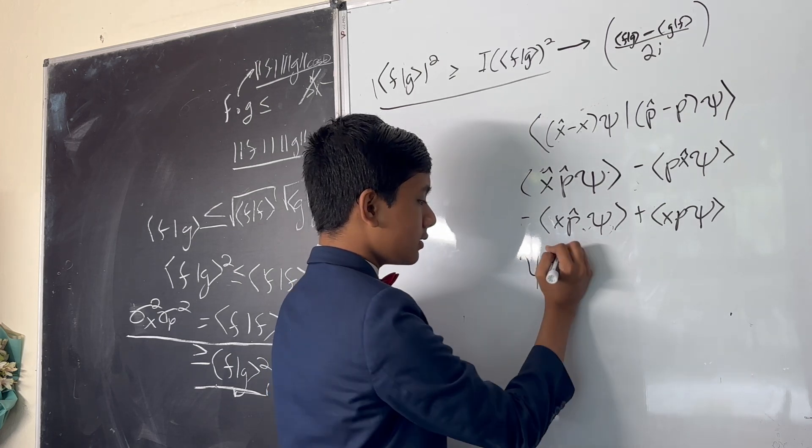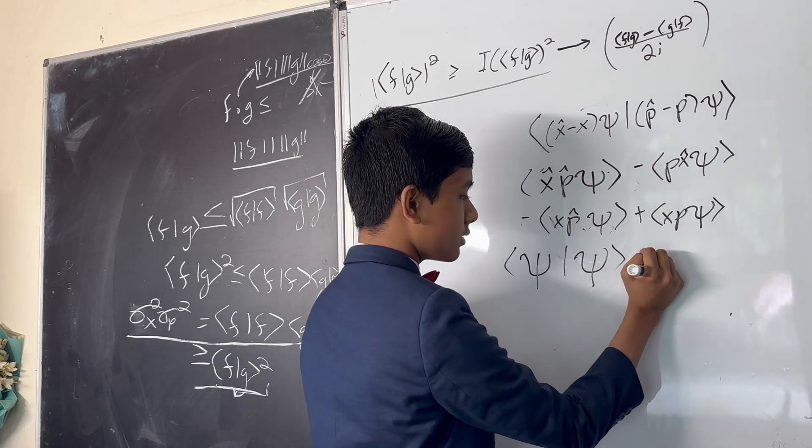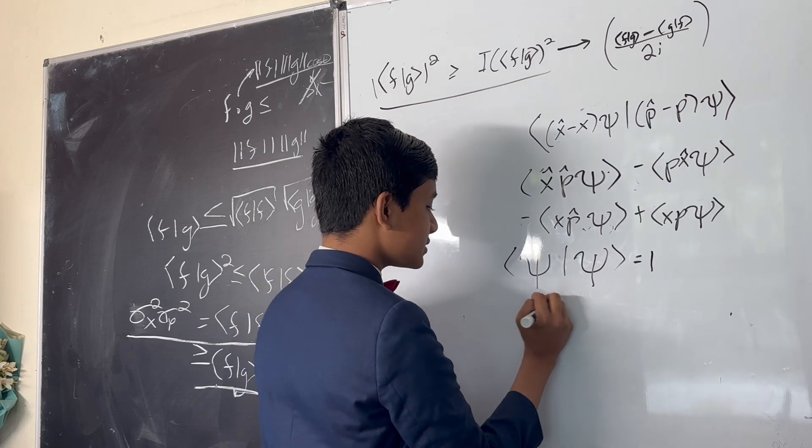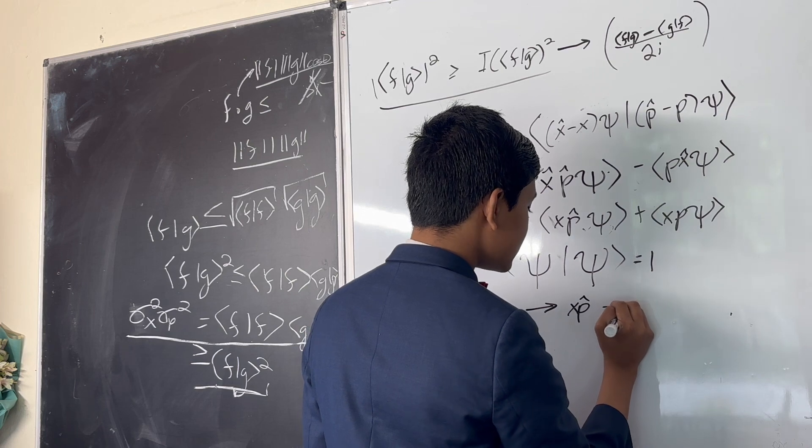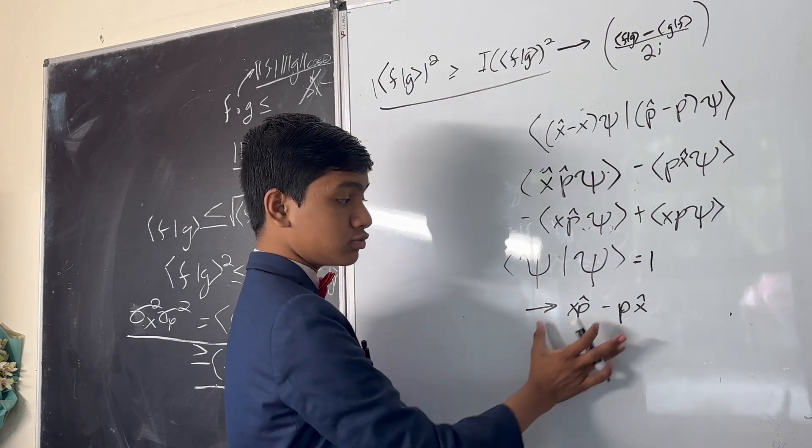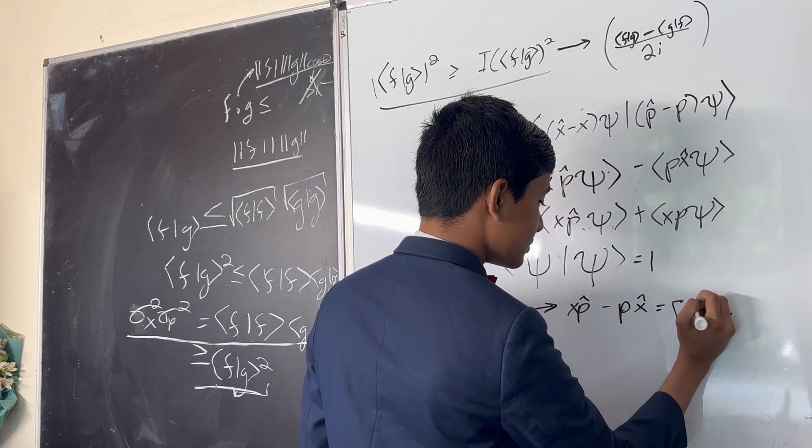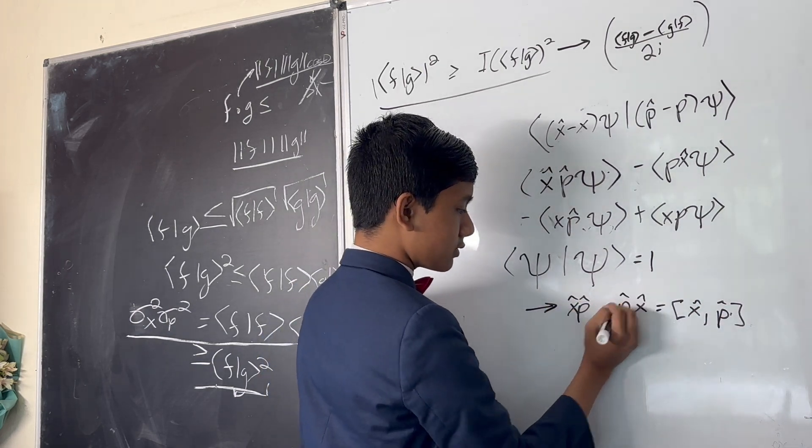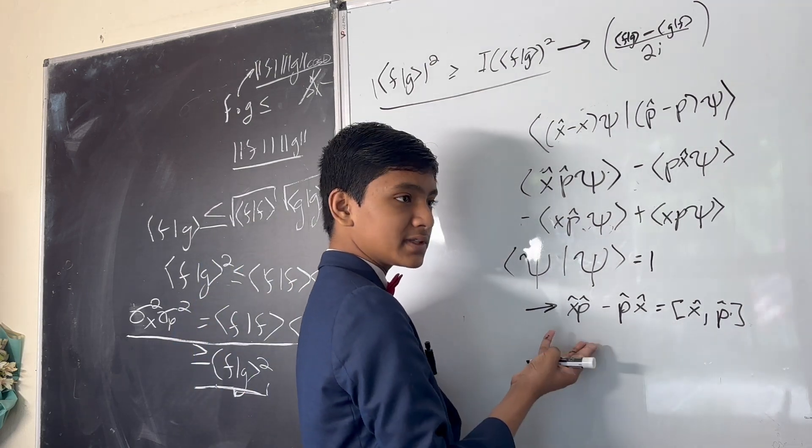Using the property that psi dot psi has to be 1 by Born's statistical interpretation, that forces this to just be equal to xp minus px. Notice the operator. So what do we do with this? Well, this is the commutator in its most general form. But oh, sorry. Now in general form, this is the commutator. But specifically, we can do a lot more with this.